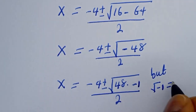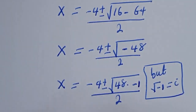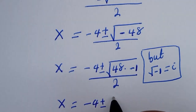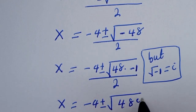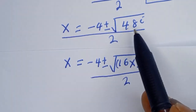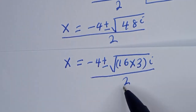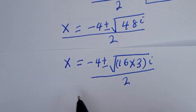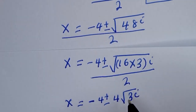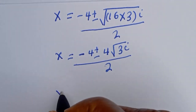Since the square root of −1 is equal to i, s will be equal to (−4 ± √48 · i) / 2. We simplify √48 as √(16 × 3) = 4√3. So s is equal to (−4 ± 4√3·i) / 2.